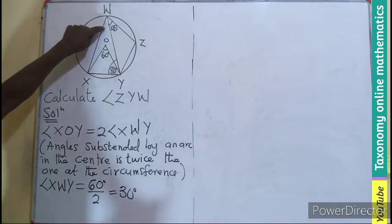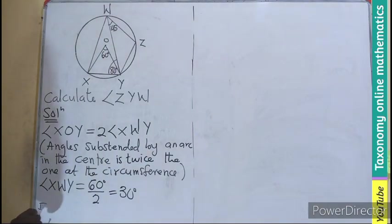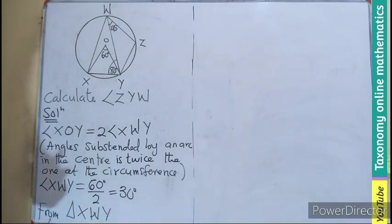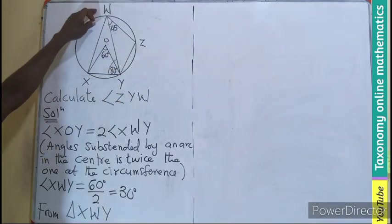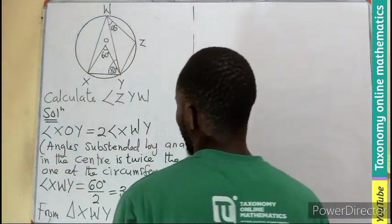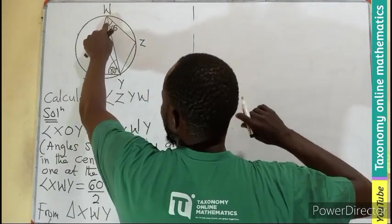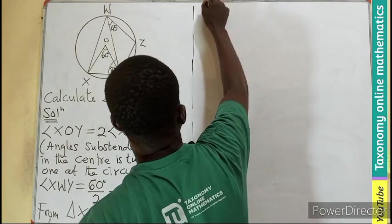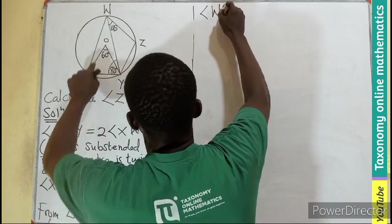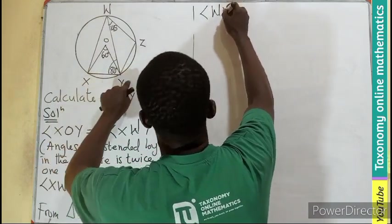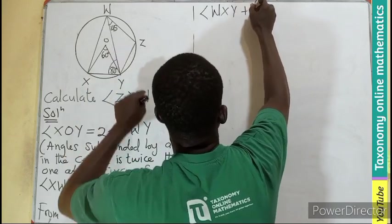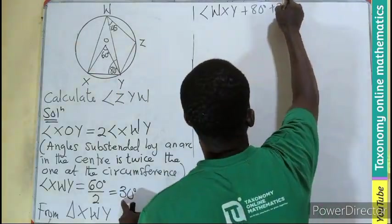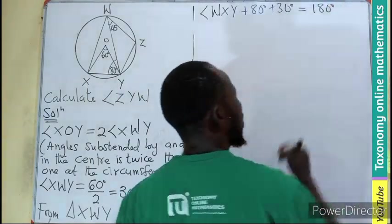The moment we know this, we can see that from the triangle XWY, the bigger triangle XWY, we can add the interior angles. So we can start by finding—already we know this, we know this. So this is the only angle left. So we can say angle WXY plus the angle we already know, 80 degrees, plus the angle we just found, 30 degrees, so give us 180.